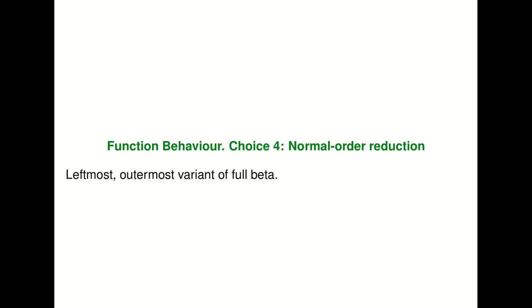There's yet another evaluation strategy called normal order reduction, where you restrict full beta to make it leftmost-outermost reduction — you're allowed to go under the lambda, but always try to evaluate the function position first. There are many different evaluation strategies, and all of them are used in different contexts, but the dominant strategy these days is call-by-value. OCaml, Java, Rust, and practically every mainstream programming language except Haskell uses call-by-value. So we can focus our attention on call-by-value.